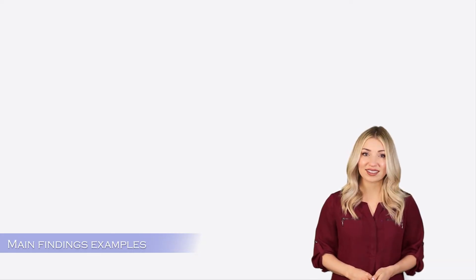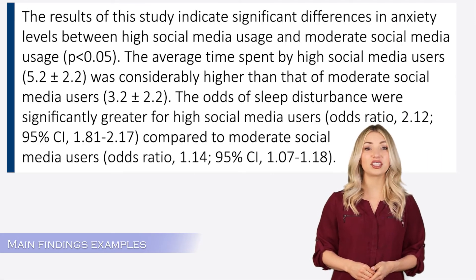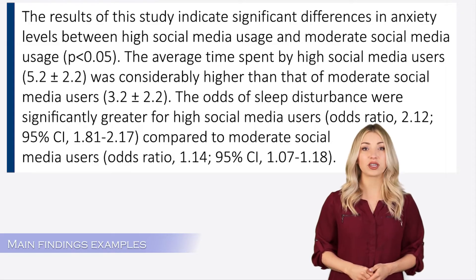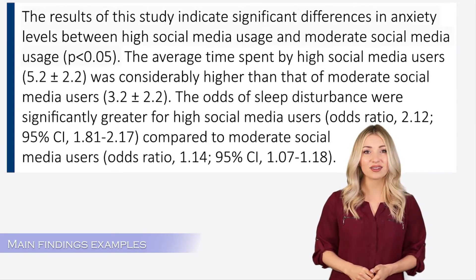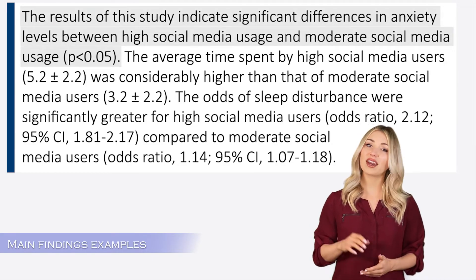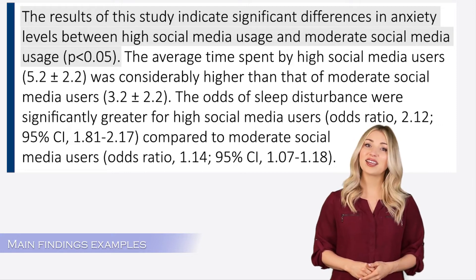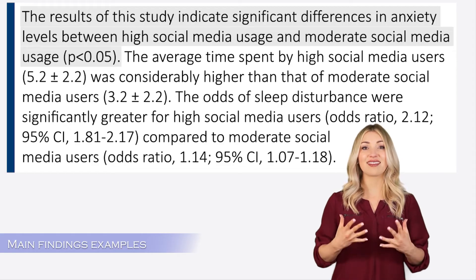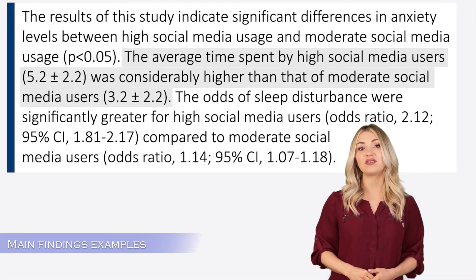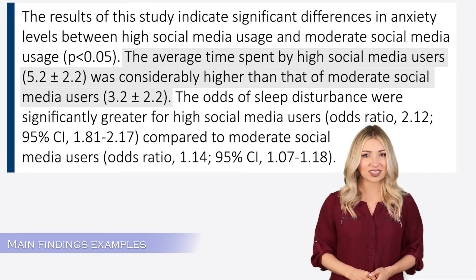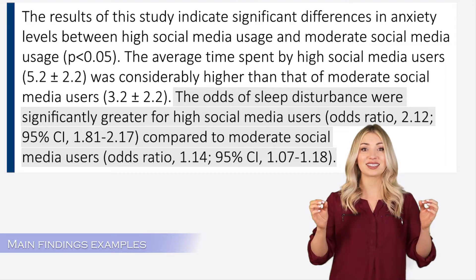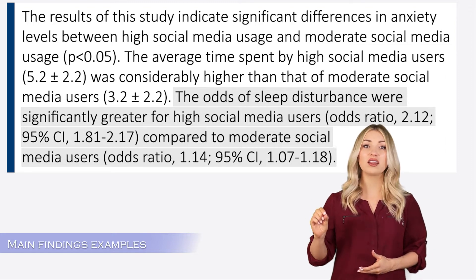This snippet is from a social sciences research paper investigating the relationship between social media and mental health. Pay specific attention to the descriptive and inferential statistics used throughout the text. The authors say there is a significant difference in anxiety levels between high social media users and moderate social media users. Since the authors used the word significant, they have specified the p-value of the statistical test. They then provide the actual values of time spent by both groups on social media, presented as mean ± standard deviation, which is the standard way to represent this type of data. In the final statement, they talk about the odds of both groups experiencing sleep disturbances, providing the odds ratio along with the confidence intervals.